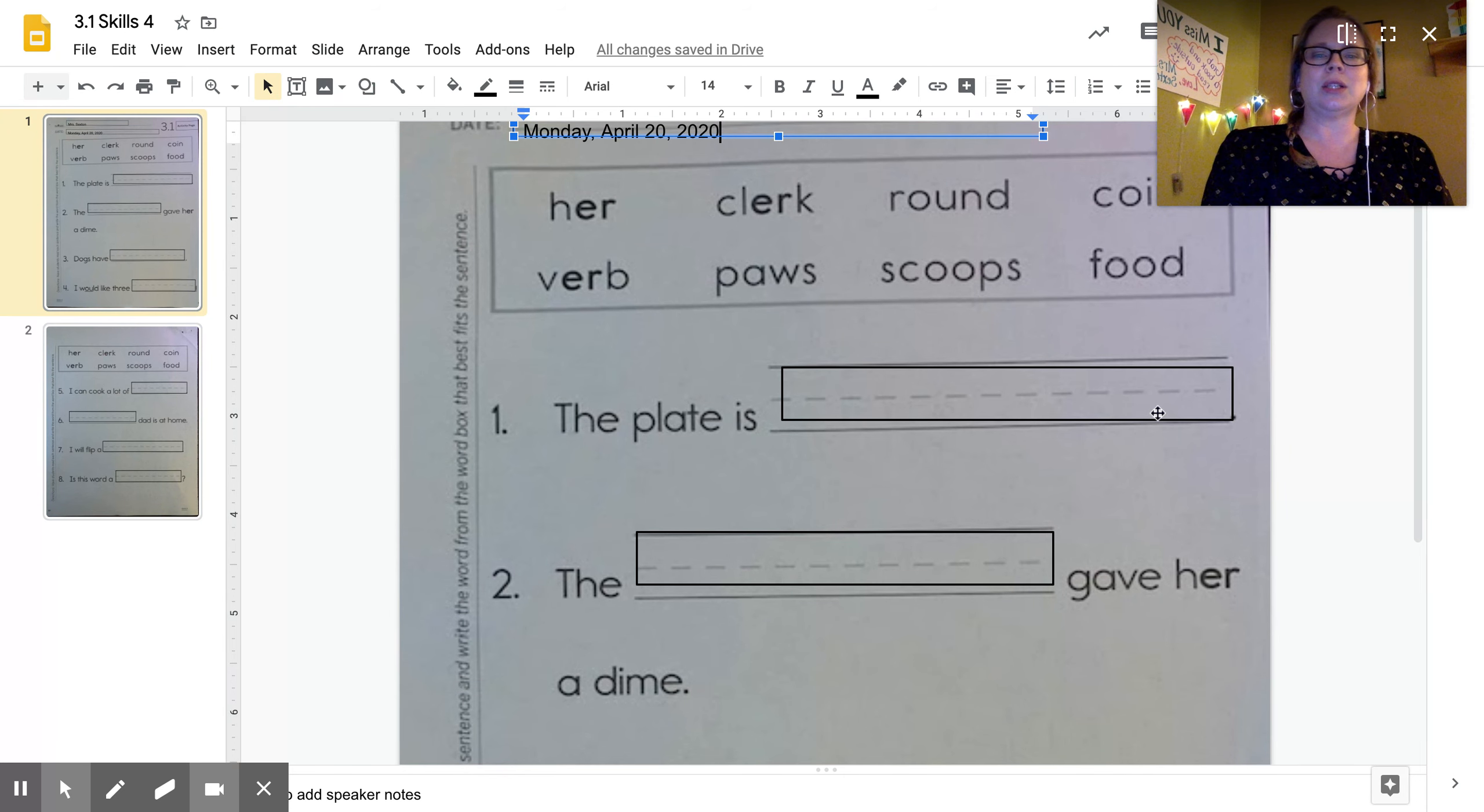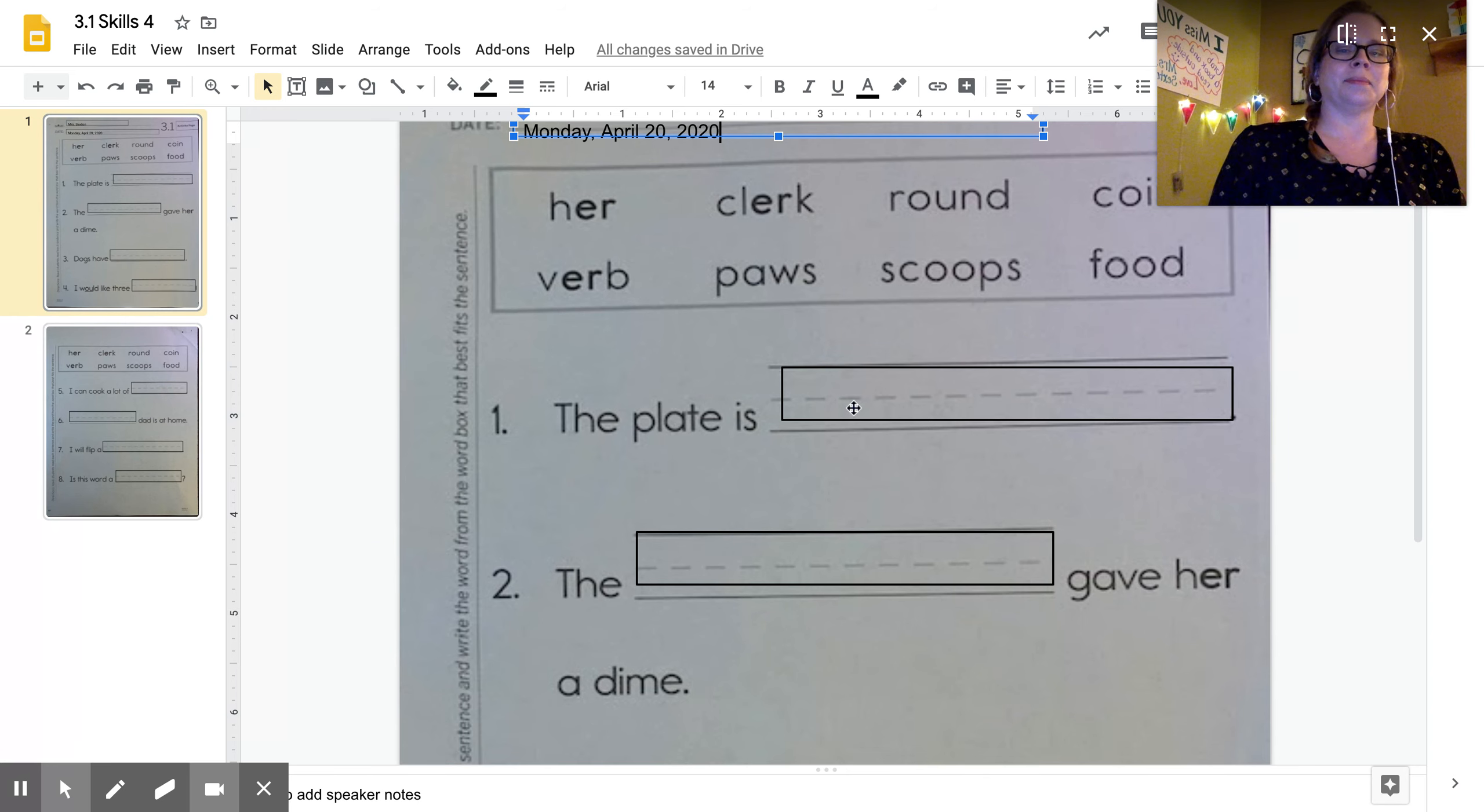So then we just figure out which word sounds the best. Let's read our first sentence: the plate is. The plate is and I can type in my box right here. Then I'm going to start typing. The plate is, is the plate her, clerk, or round? The plate is round.